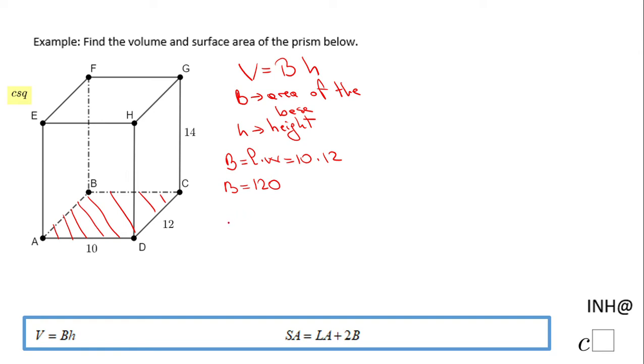Now we can go and find the volume because the volume is going to be this area of the base, which is 120, times the height, which is 14. So we're going to end up with 1680 cubic units. This is the volume of this rectangular prism.